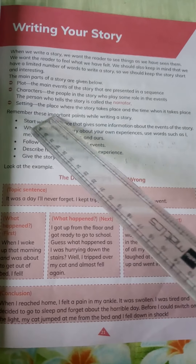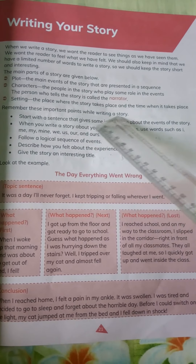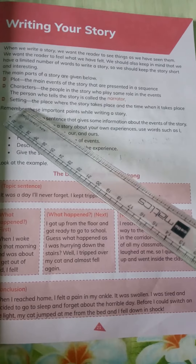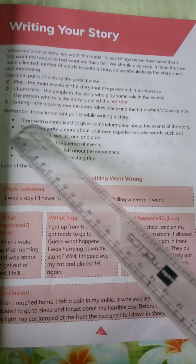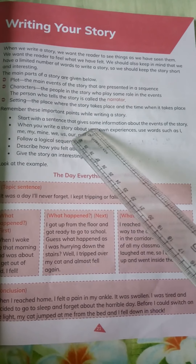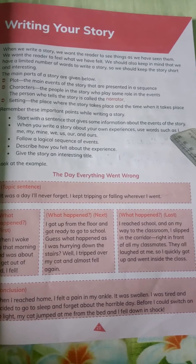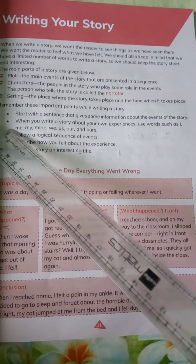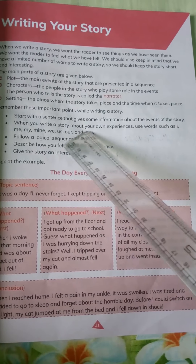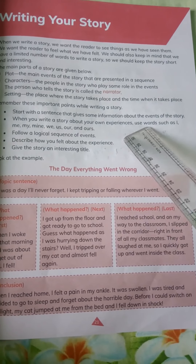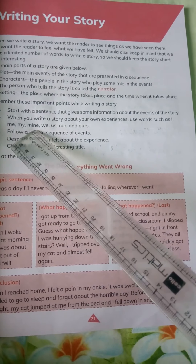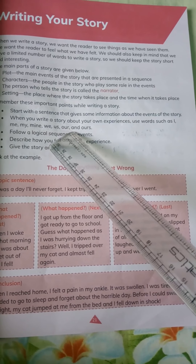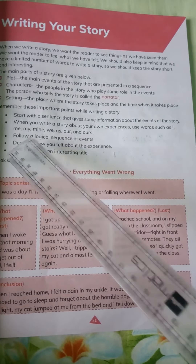Remember these important points while writing a story: we should remember the plot, character, and setting. Start with a sentence that gives some information about the events of the story. When you write a story about your own experience, use words such as I, me, my, mine, we, us, our, and ours.